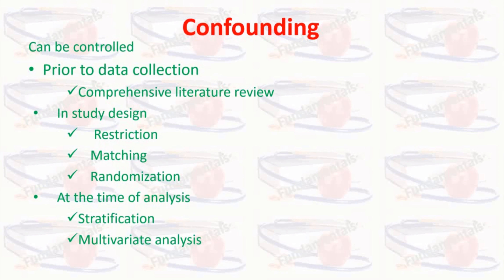Confounding can be controlled before data collection while designing the study, and at the time of analysis. Prior to data collection, it can be controlled by comprehensive literature review. In the study design, it can be controlled by restriction, matching, and randomization. By stratification and multivariate analysis, it can be controlled at the time of analysis. It is preferable to address confounding at the time of designing the study.